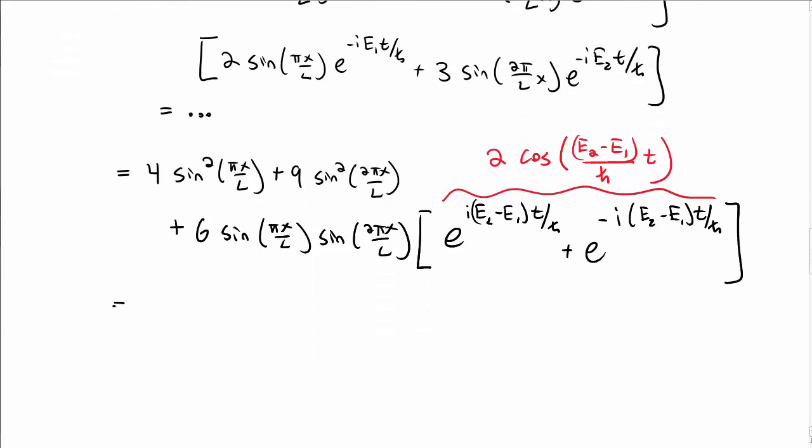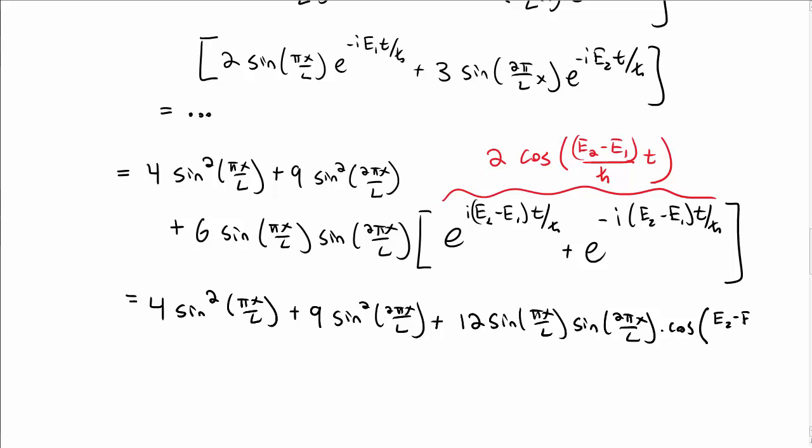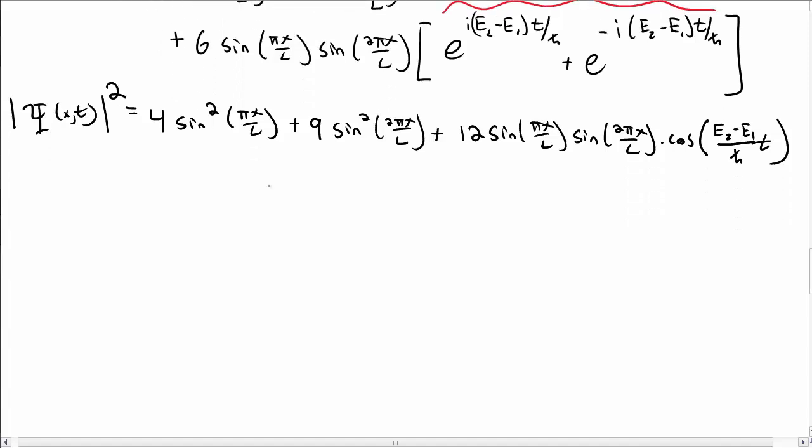And so I could write this in a slightly more compact form as my time-independent terms for n equals 1 and n equals 2, and then a time-dependent term which involves a multiplication of the wave function for n equals 1 and n equals 2 times the cosine (E_2 - E_1) over ℏ t. And so this is the probability density, capital Ψ absolute value squared.